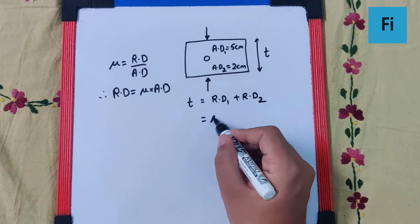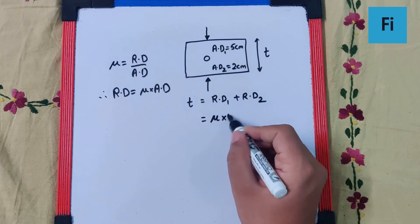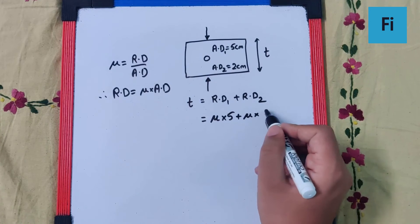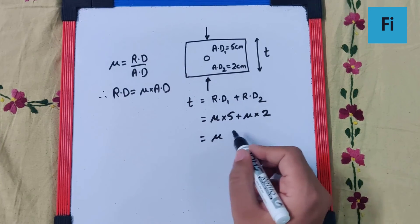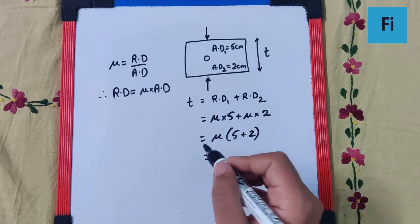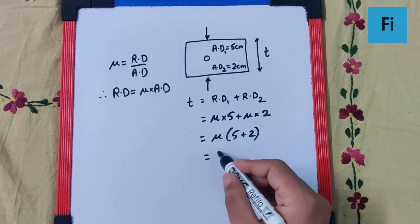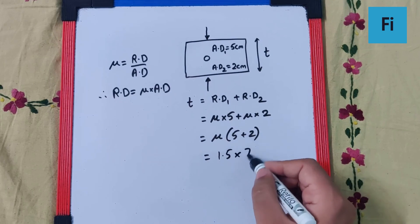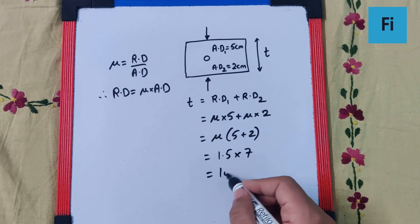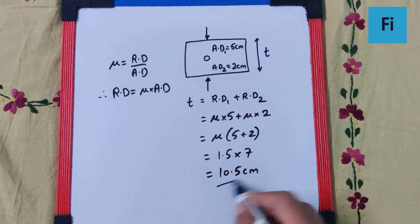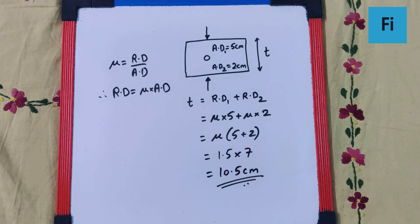This is mu times 5 plus mu times 2, which is mu times 5 plus 2. So, that will be 10.5 cm, which will be our final answer.